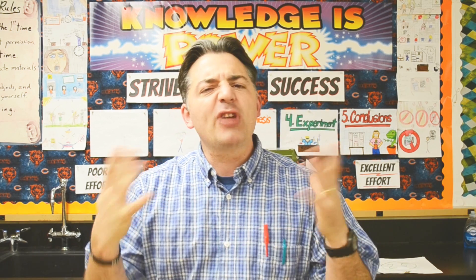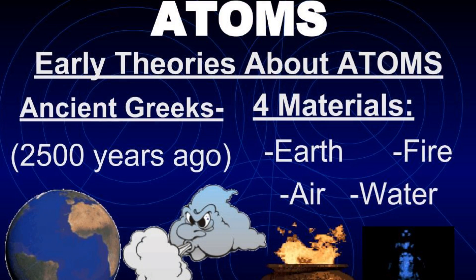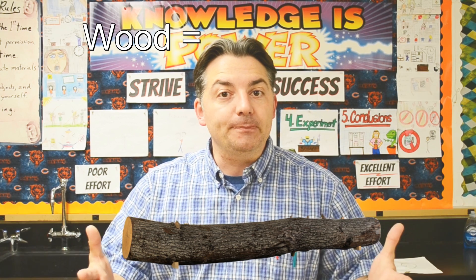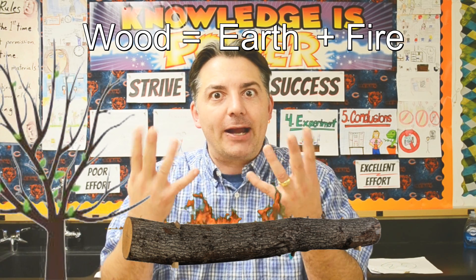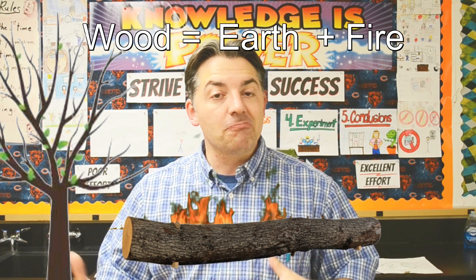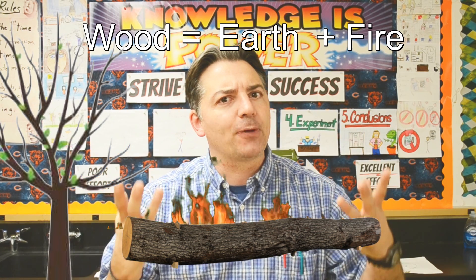So we're going to go back to the ancient Greeks, about 2,500 years ago, and look at what they thought about matter. The ancient Greeks thought that everything was made up of just four materials: earth, air, fire, and water. In some combination, everything was made up of those, and it made sense. They could look at the world around them — for example, a log could catch on fire, so it was part earth and part fire. It was something they could wrap their brains around.